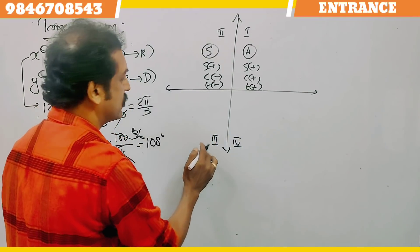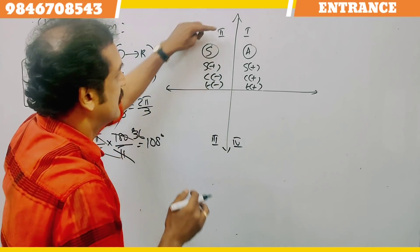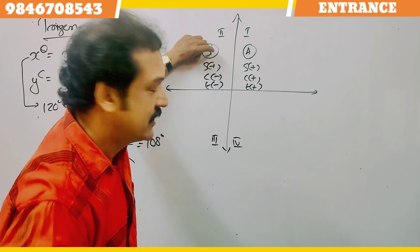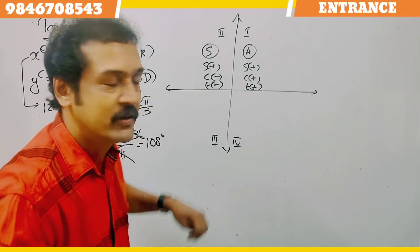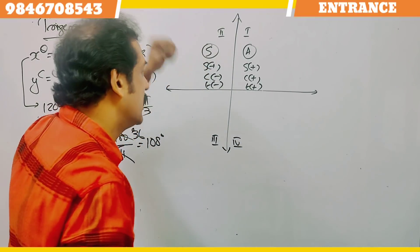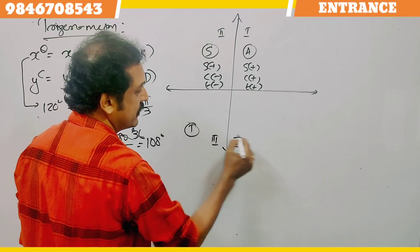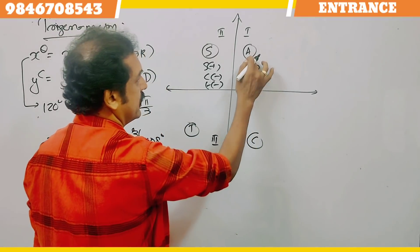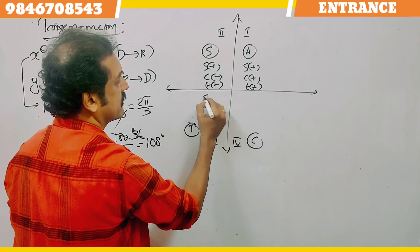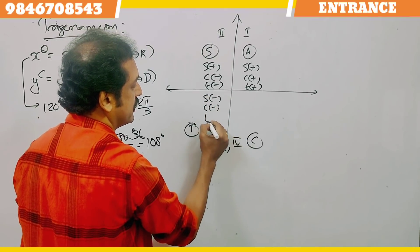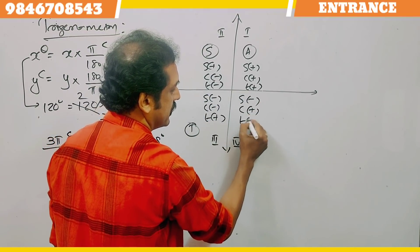In the third quadrant, tan is positive. The mnemonic is A, S, T, C: All positive (1st), Sin positive (2nd), Tan positive (3rd), Cos positive (4th). Sin is defined as opposite/hypotenuse, cos as adjacent/hypotenuse, and tan as opposite/adjacent. In the fourth quadrant, sin is negative, cos is positive, and tan is negative.